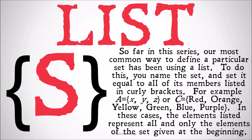Or C equals {red, orange, yellow, green, blue, purple}. In these cases the elements listed represent all and only the elements of a set given at the beginning.